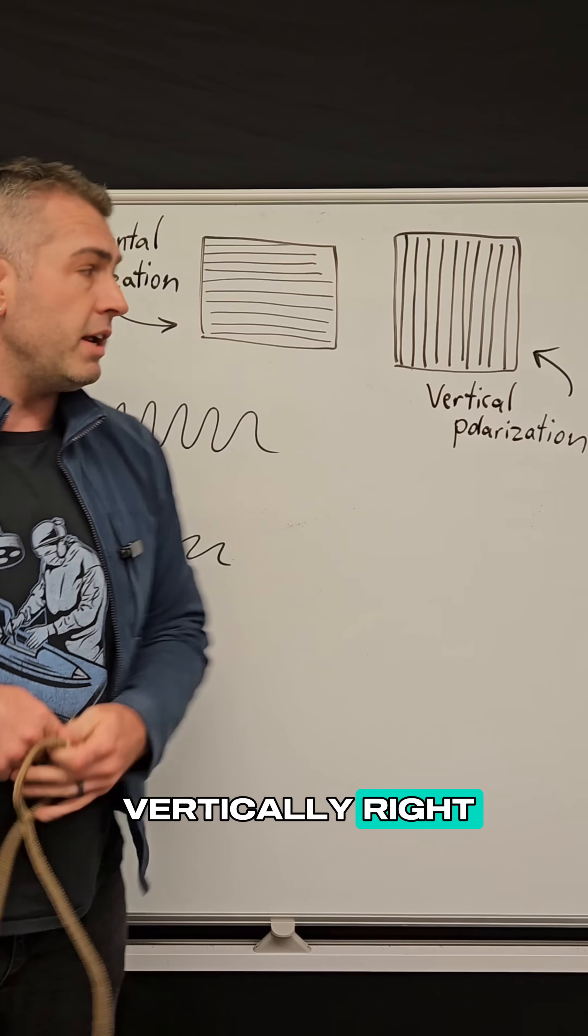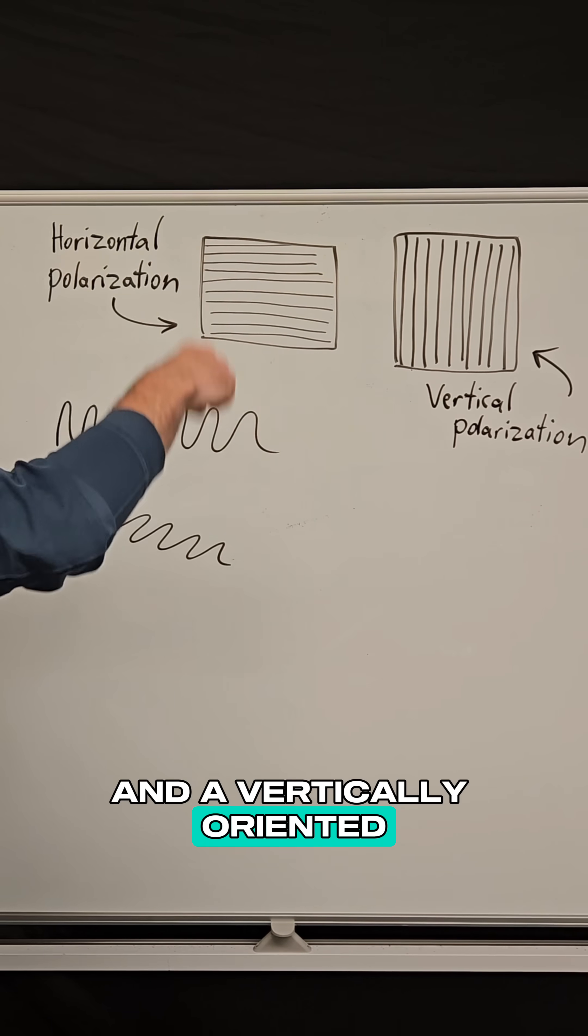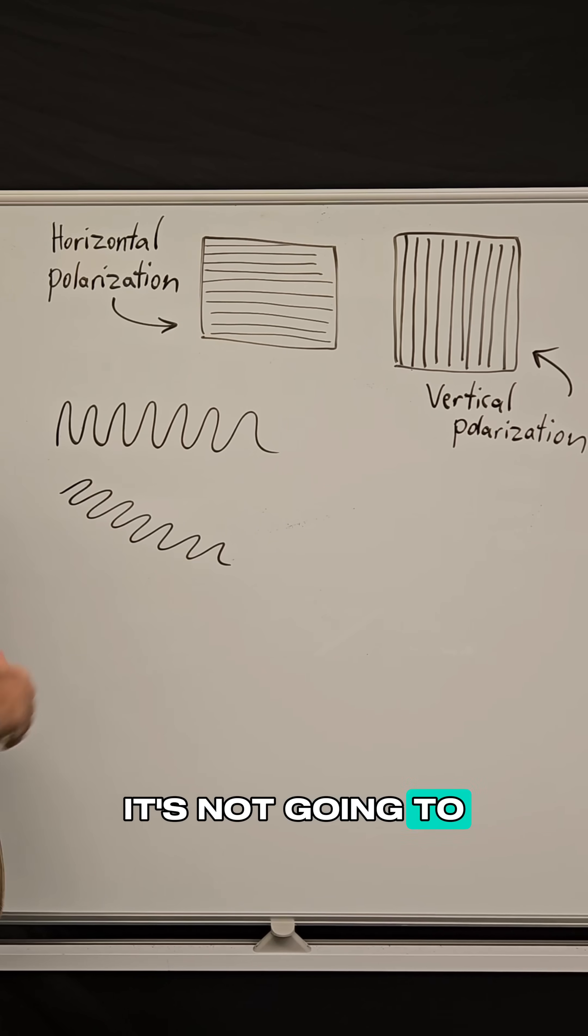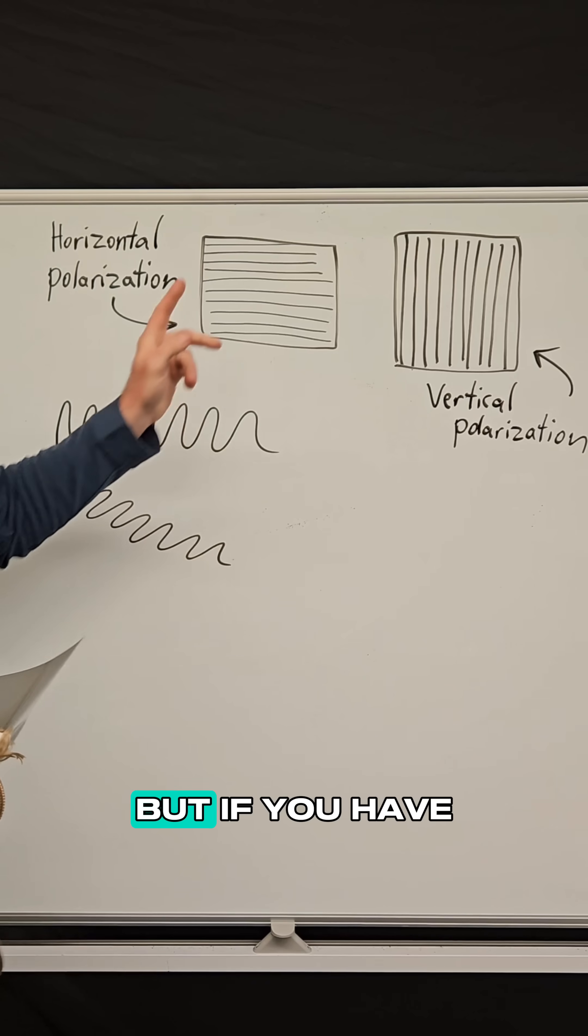If you have horizontal polarization and a vertically oriented light wave tries to pass through, it's not going to be able to get through that filter, which looks like this.